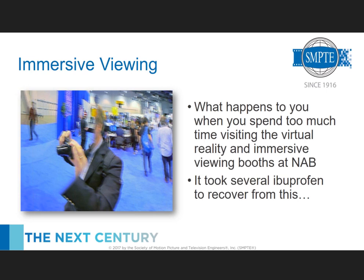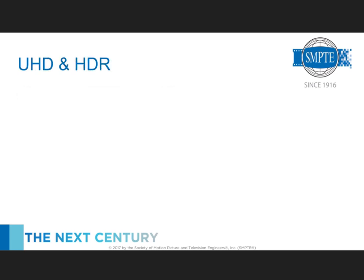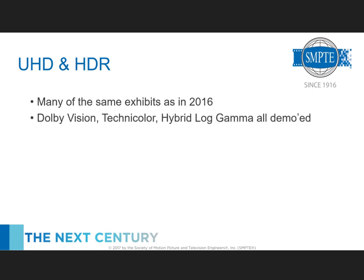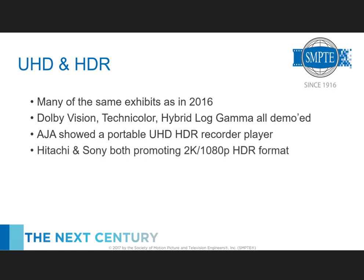Switching to Ultra HD and HDR: at CES everybody assumes we're talking about Ultra HD, it's been around four years now. At NAB many exhibits were similar to 2016 without radically different things. HDR formats demoed included Dolby Vision, Technicolor, and Hybrid Log Gamma. Samsung did not show their tone mapping, which was surprising. Companies are now making portable recorder/players that support HDR — AJA had a very interesting box for that. We're also starting to see talk about promoting HDR for 1080p and 2K, with Hitachi and Sony both doing presentations on exactly that idea.